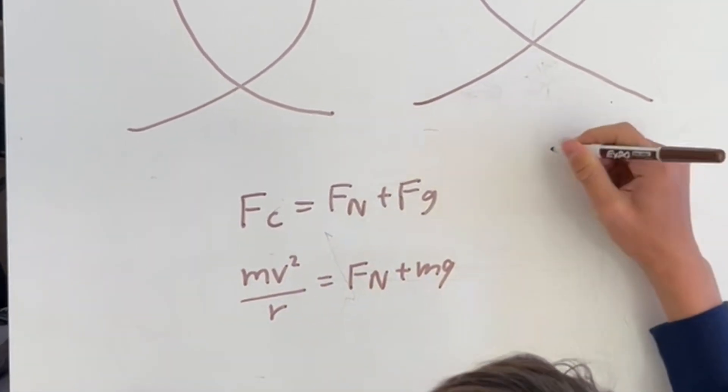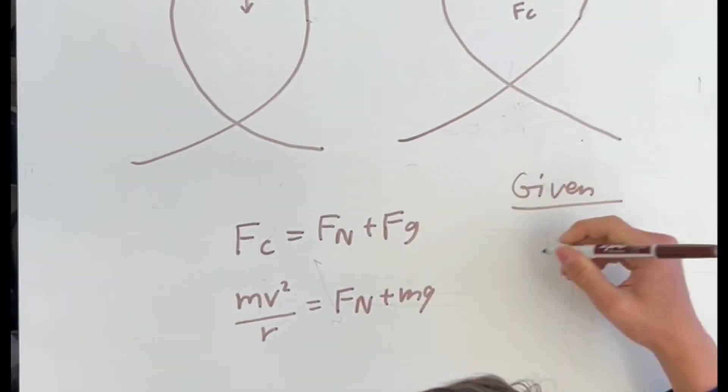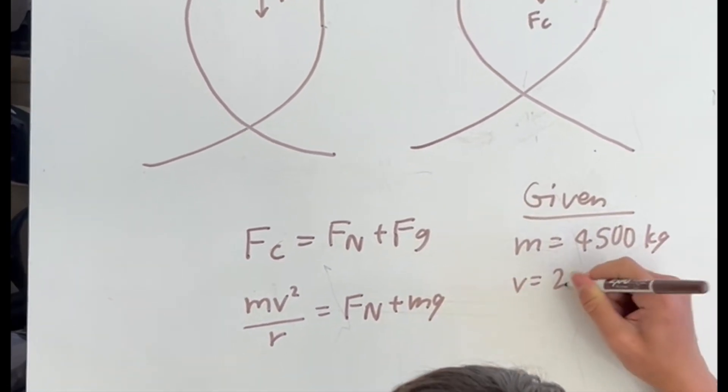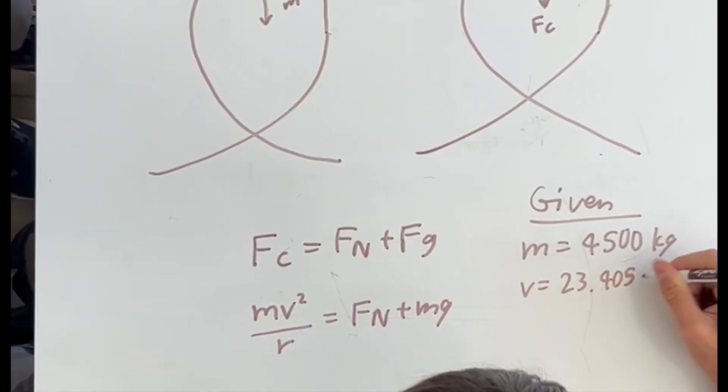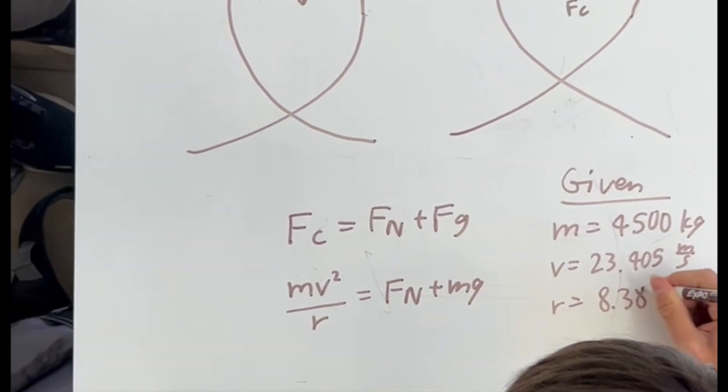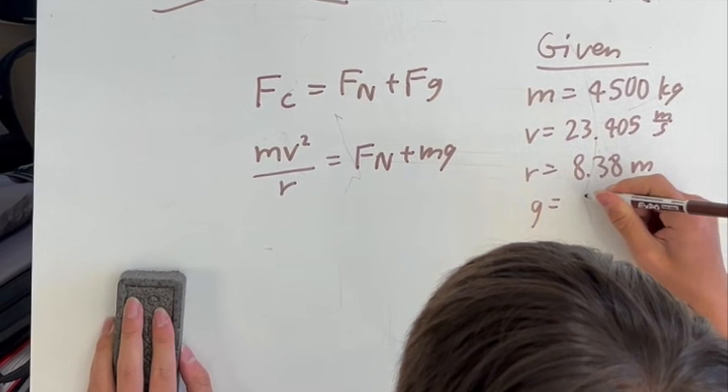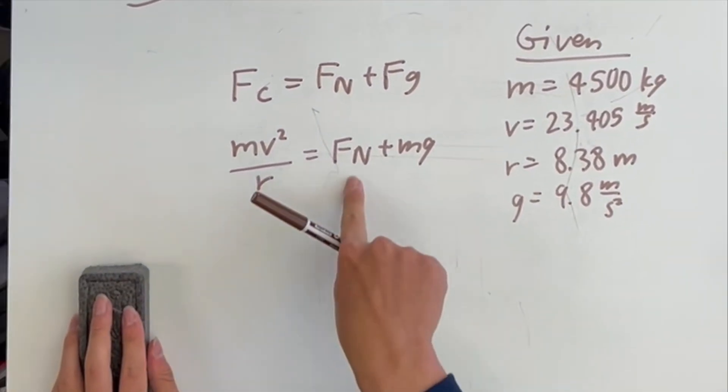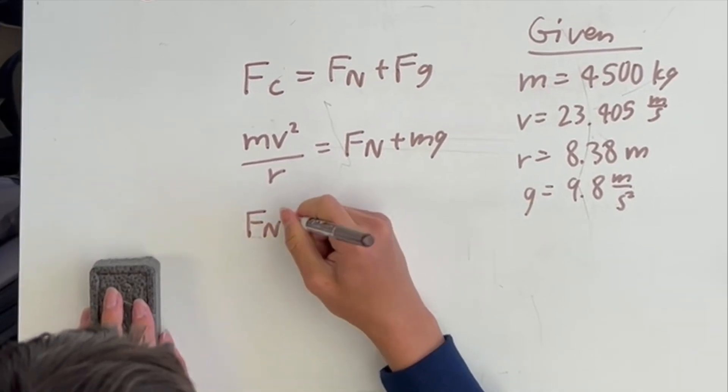And on the side here, we are listing our givens. We're given that the average mass of a cart is 4,500 kilograms for all the carts. The velocity is 23.405 meters per second after it is at the ground from the highest point. And the radius is 8.38 meters. And we're using 9.8 meters per second squared for the acceleration due to gravity.